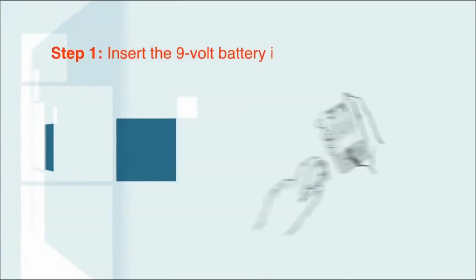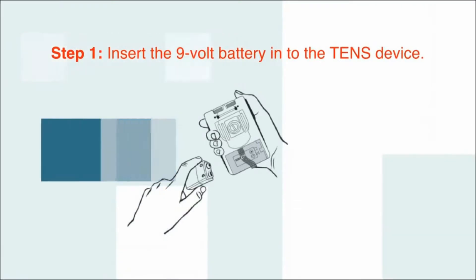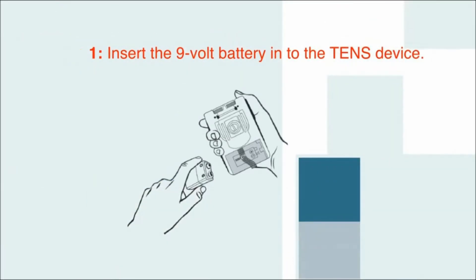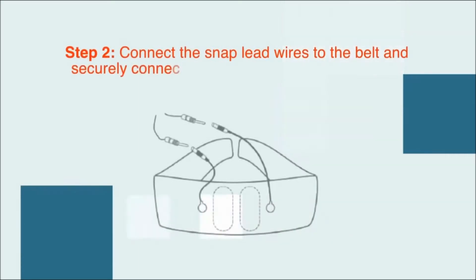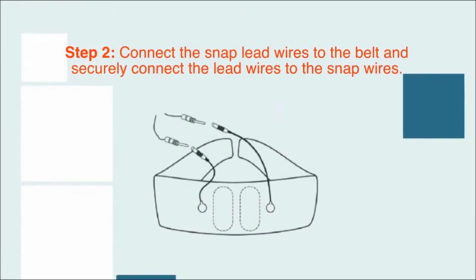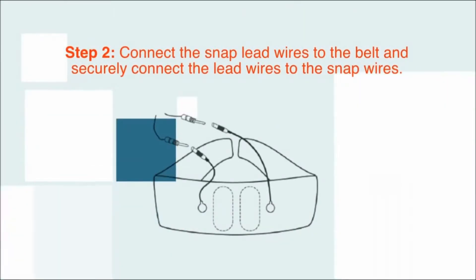First, insert the 9-volt battery into the TENS device. Next, connect the snap wires to the belt and then securely connect the lead wires to the snap wires.